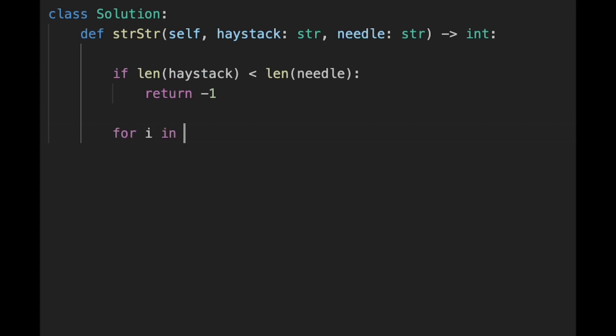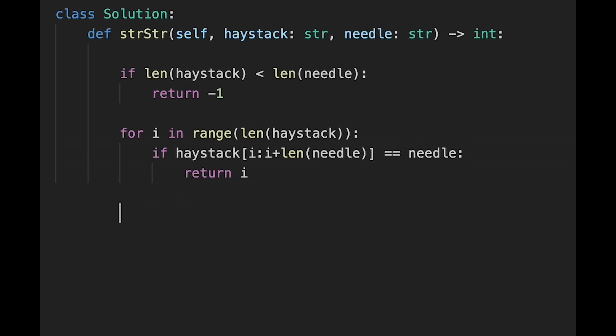For i in range length of haystack, if haystack from current index i to i plus length of needle equals needle, we should return current index number. If not the case, return -1. Let me submit it. Looks good.